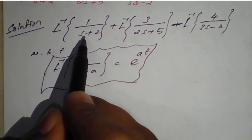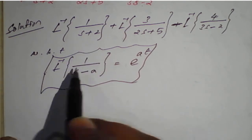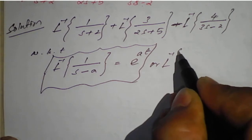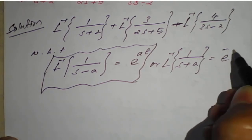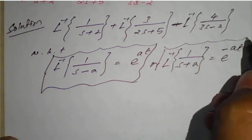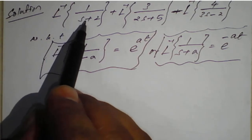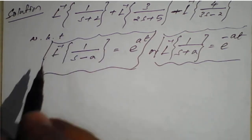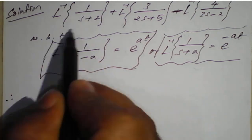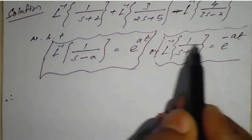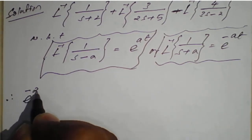For the first term, inverse Laplace of 1 upon s plus 2: using the formula L inverse of 1 upon s plus a equals e raised to minus at, the value of a is 2. So the first term gives e raised to minus 2t.